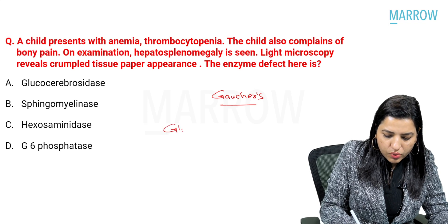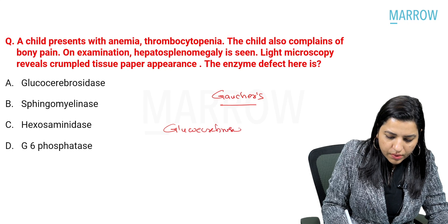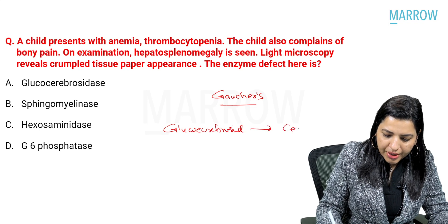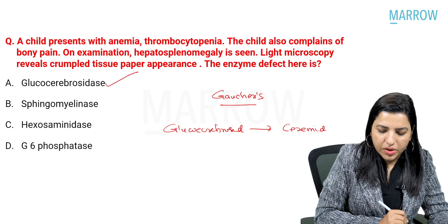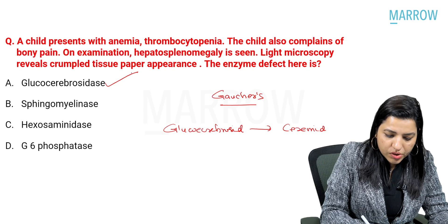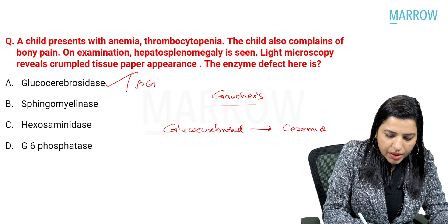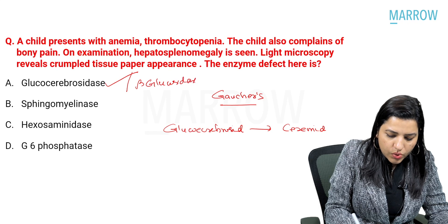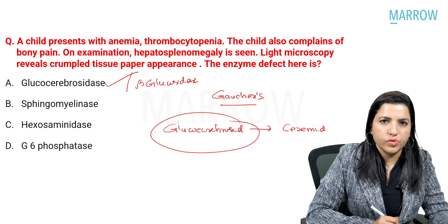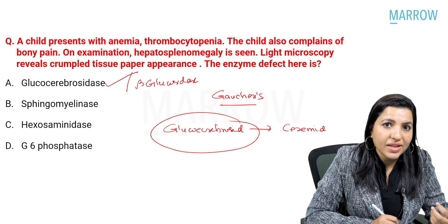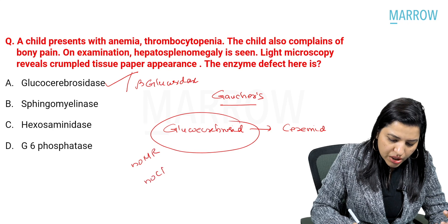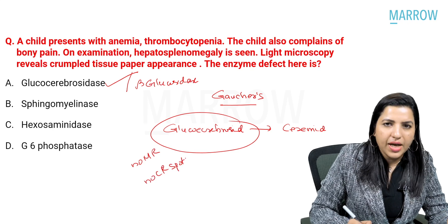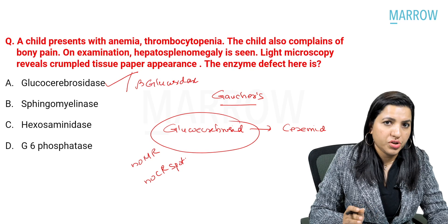In Gaucher's disease, glucocerebroside has to be converted to ceramide, and for that we need glucocerebrosidase. So the enzyme defect is glucocerebrosidase, also called beta-glucosidase. What is accumulated? Glucocerebroside. And glucocerebroside accumulates in extra-neural tissue, so there is no mental retardation and no cherry red spot in classical Gaucher's disease — that is Gaucher's disease type 1.